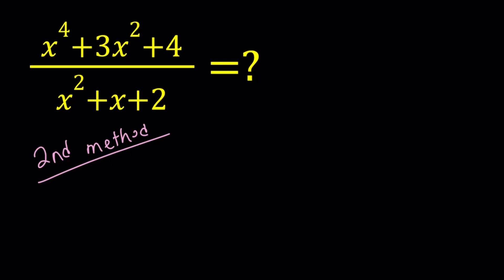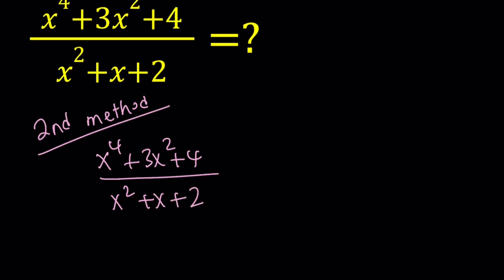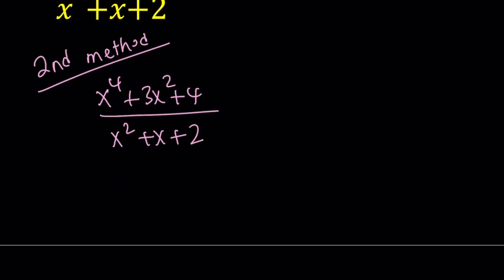So for my second method, I'm just going to set this expression. Obviously, I expect to get a polynomial from here, so that means the top is divisible by the bottom evenly with no remainder. So look at the top. It's a quartic divided by a quadratic, and they're both monic, which means the leading coefficient is 1.